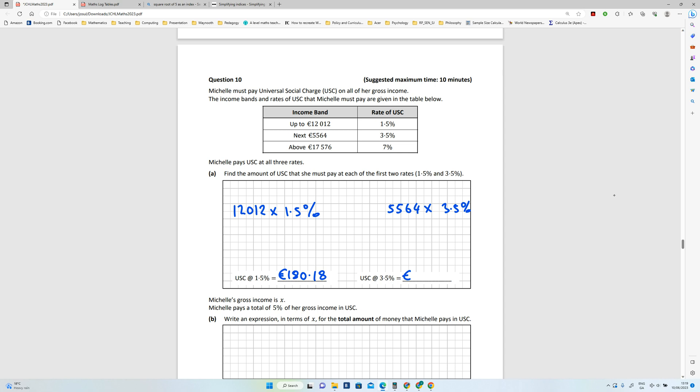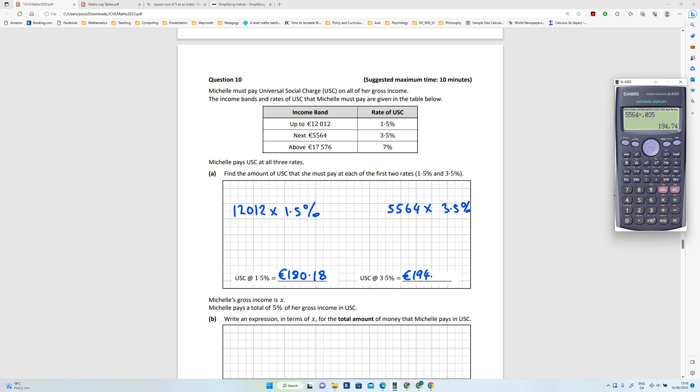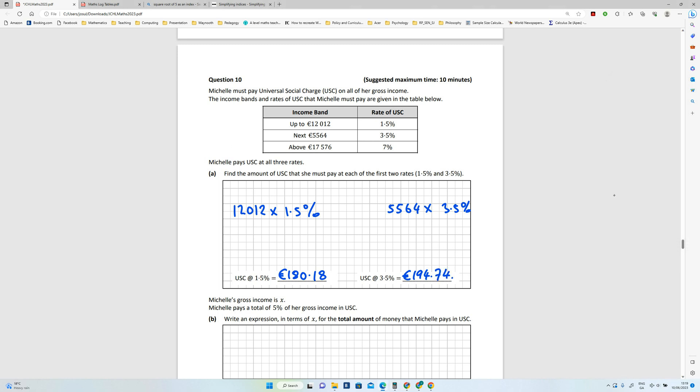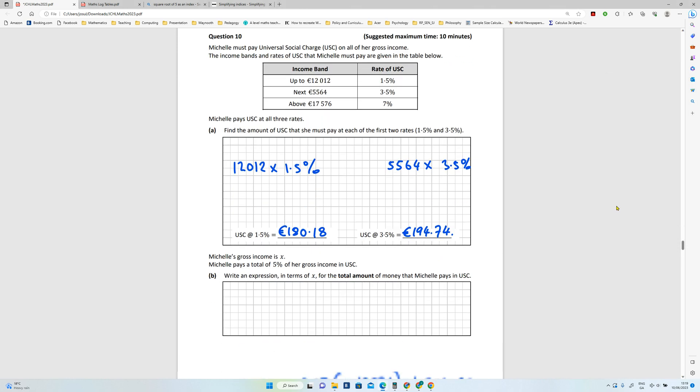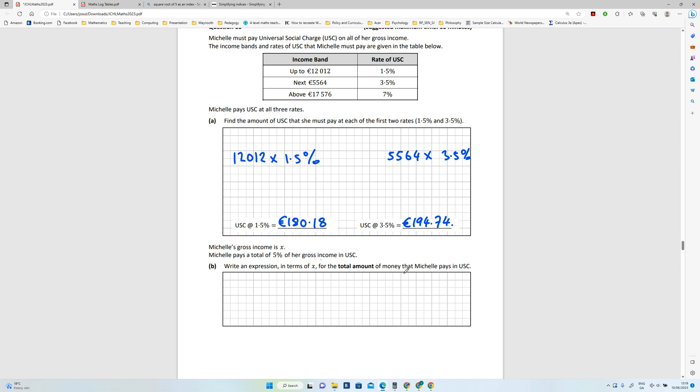Okay, so that's part a. Michelle's gross income is X. We're going to probably have to find that. Michelle pays a total of five percent of her gross income in USC, so that's the same as saying 0.05X. That's what her total USC is going to be.